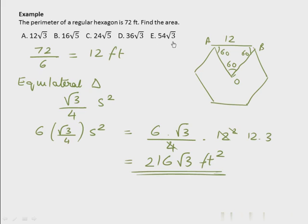We are done with basic questions on quadrilaterals and polygons. Remember that in many cases, all you need to do is reduce the shape to triangles — then life becomes easy because we have total control over the triangle. In the next lesson, we will look at circles.